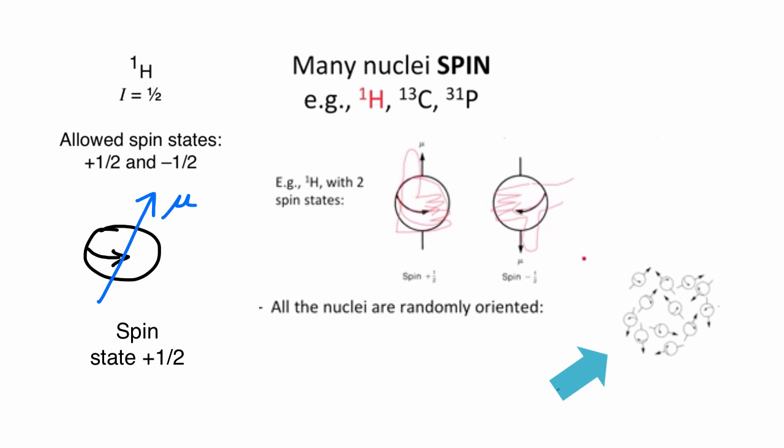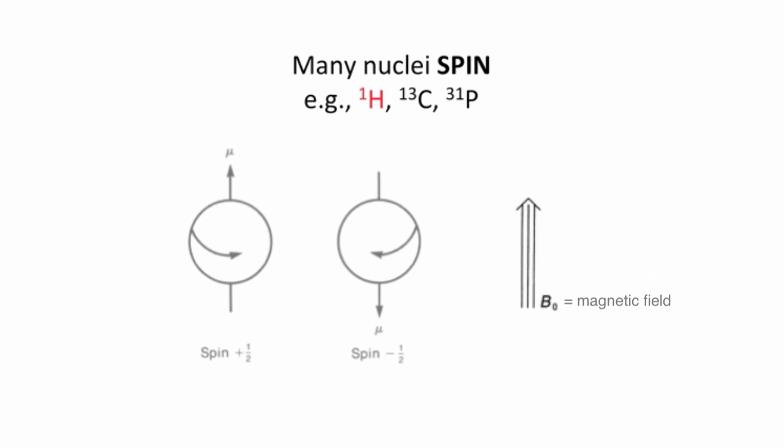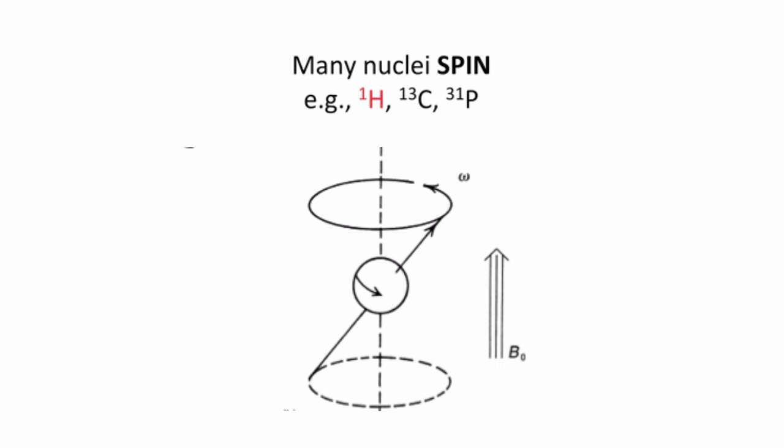Outside of a magnet, those magnetic moments point randomly in all directions. When we put a nucleus that has spin i into a magnetic field, such as the NMR spectrometer, the magnetic moments line up with or against the magnetic field.